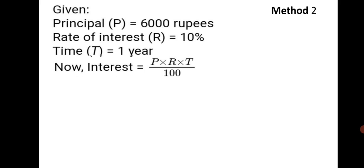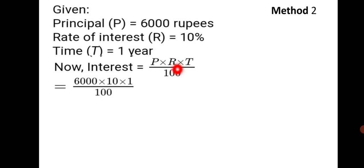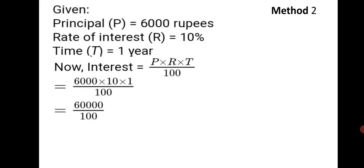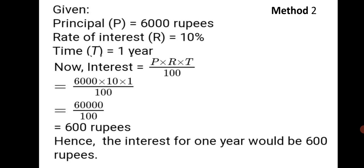Now substitute the values: P is 6000, R is 10, T is 1 year. So Interest equals 6000 into 10 into 1 upon 100. Reduce the zeros — you get 600 rupees. Hence, the interest for 1 year would be Rs. 600.